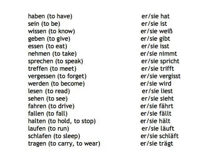The verb forms which you can print out from the digital booklet are: haben — to have — er/sie/es hat; sein — to be — er/sie/es ist; wissen — to know — er/sie/es weiß; geben — to give — er/sie/es gibt; essen — to eat — er/sie/es isst; nehmen — to take — er/sie/es nimmt; sprechen — to speak — er/sie/es spricht.